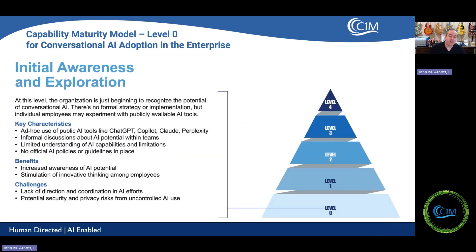The first level is level zero. This is actually the most important level. Level zero is the cultural adoption of natural language in the enterprise. In any organization, when you want to have people start using tools in a different way — a way that is unfamiliar or new to them — you have to get them comfortable with it. Using natural language to interact with systems is no different.